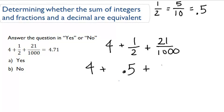And then finally, 21 over 1,000. 21 over 1,000 is the same thing as 0.021.